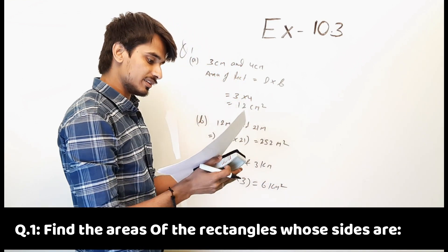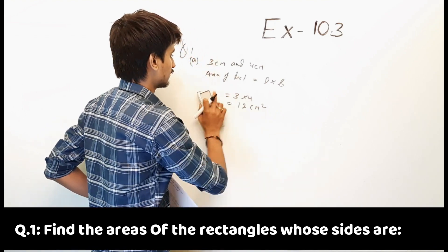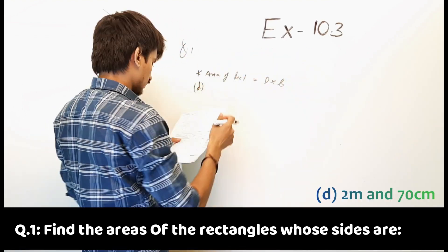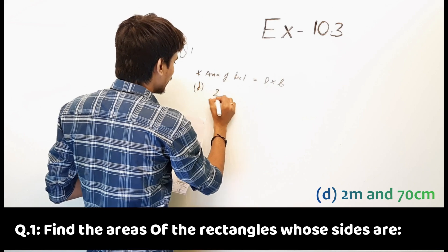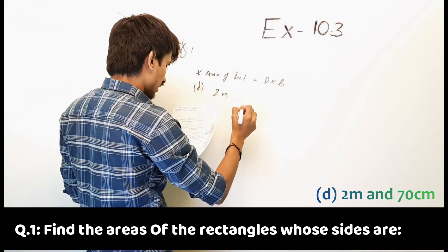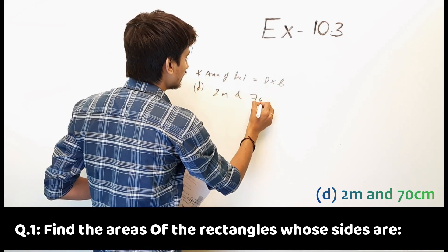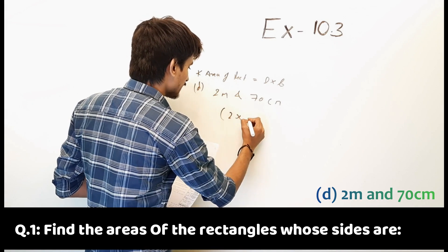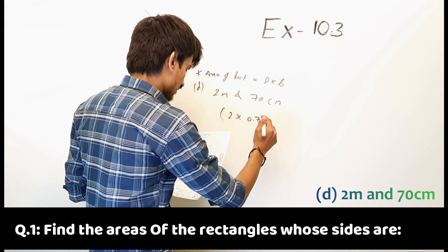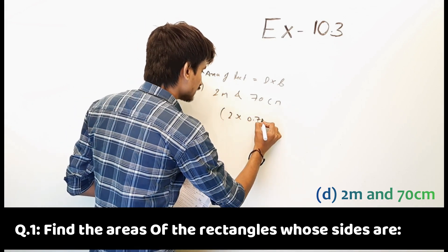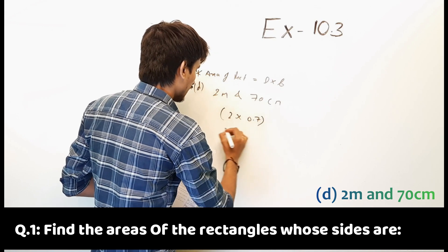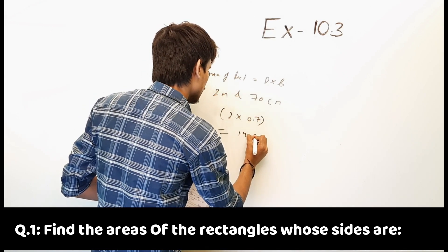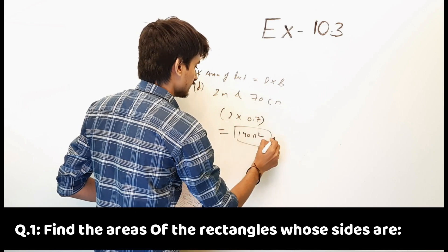And last, part D: sides are 2 meter and 70 centimeter. So 2 multiplied by 0.7 is equal to 1.40 meter square. So this is the answer.